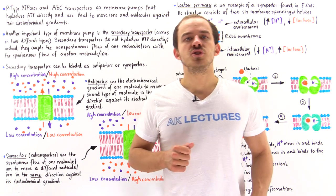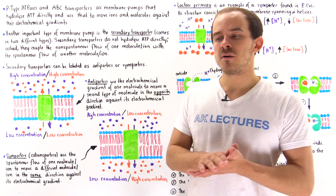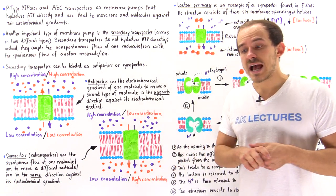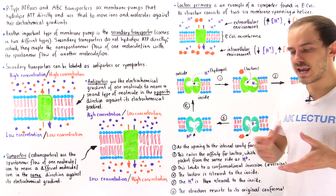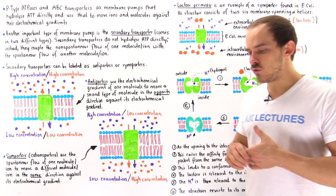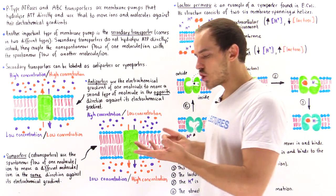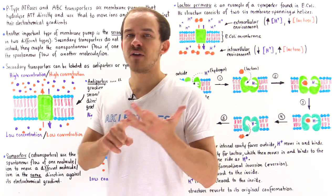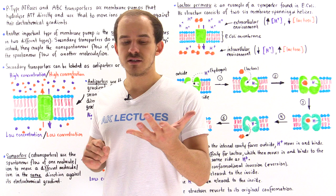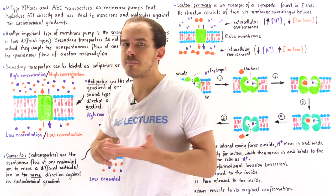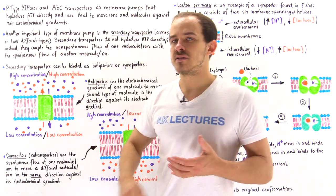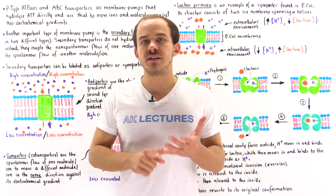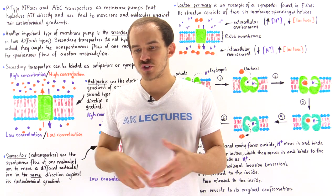So far in our discussion on membrane pumps, we focused on pumps that utilize ATP molecules directly. We focused on two types of ATPases: P-type ATPases and ABC transporters.